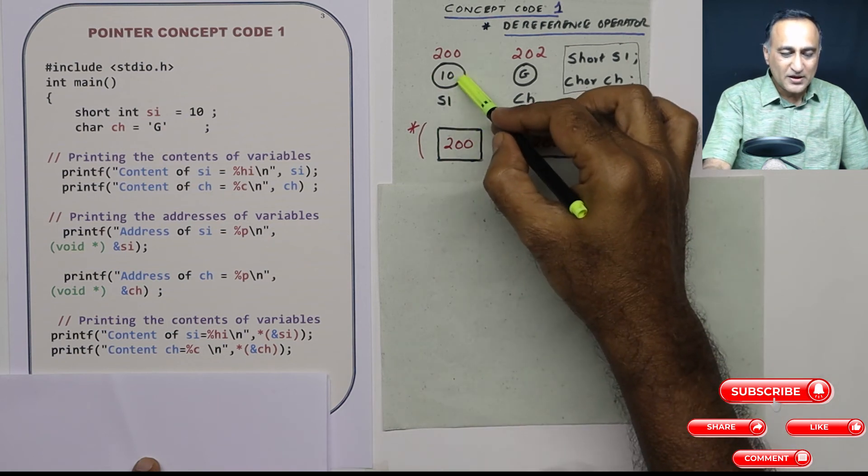So if you have understood this particular problem, you will understand all of pointers without any problem. The key part is understand what is a variable, how to print the address of a variable, and star gives you content or value at that particular address. So if I print address of SI, it will print 200. But since I'm using star address of SI, it gives me value or content at address 200, which happens to be 10. Star address of CH, address of CH is simply 202, star means what is the content or value at address 202, which happens to be G.